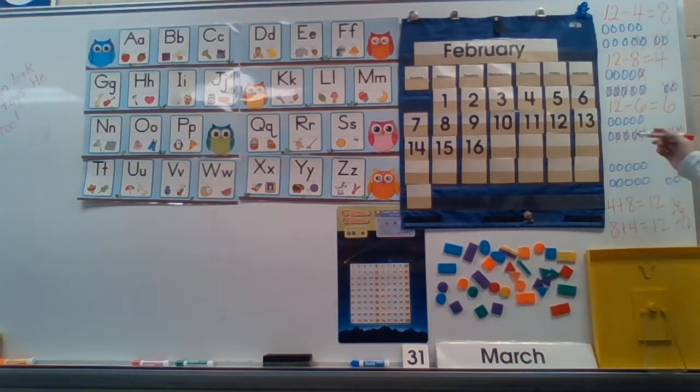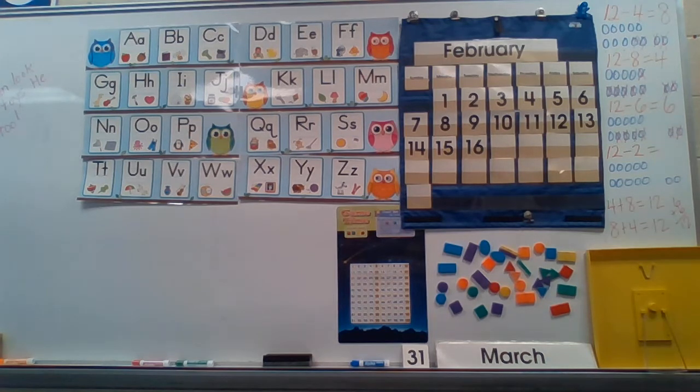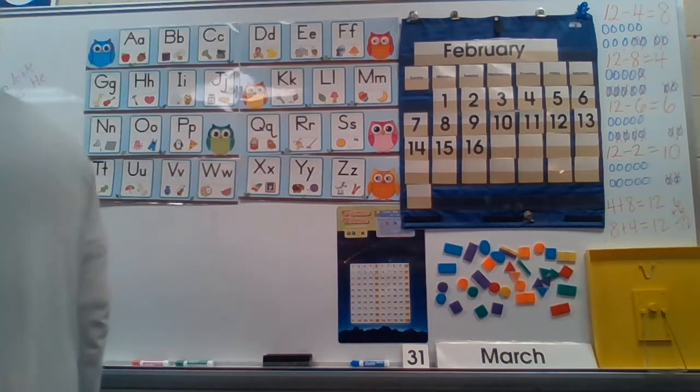For the next one, let's do 12 minus 2. I'm only going to take away these two that are outside of my 10-frame, so I don't even need to count what's left to get the answer because I know that there are 5 in this row and 5 in this row, and that equals 10.